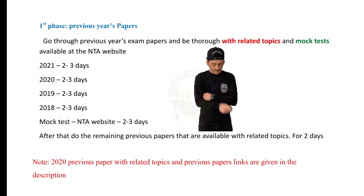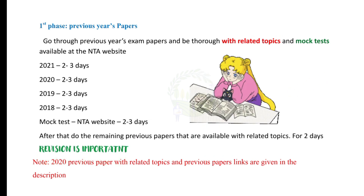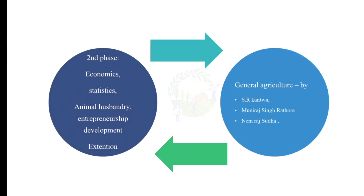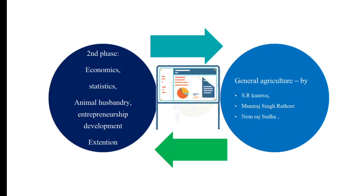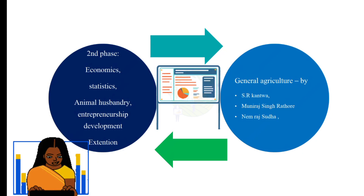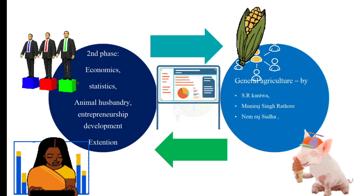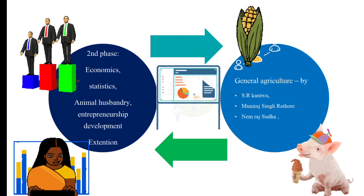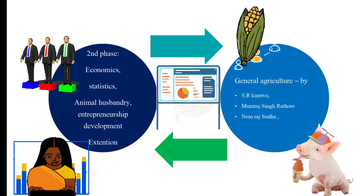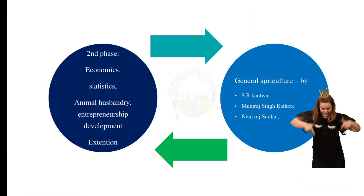After completing every previous year examination paper review, do the revision. In the second phase, concentrate on subjects like economics, statistics, animal husbandry, entrepreneurship development, and extension. The important MCQs for these subjects are available in general agriculture books like S.R. Khandwa, Milra Singh Rathod, and Reem Rajda. Links for buying these books are provided in the description below.